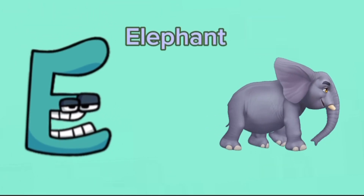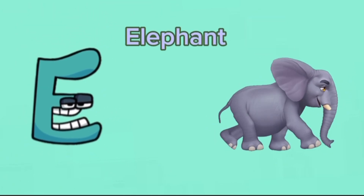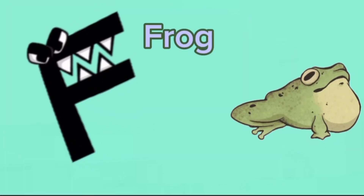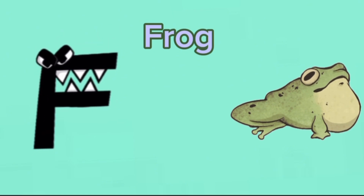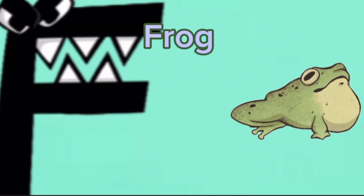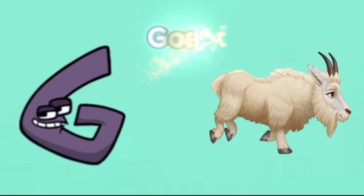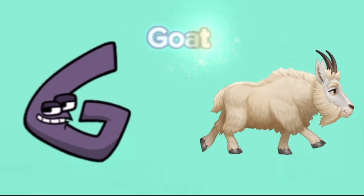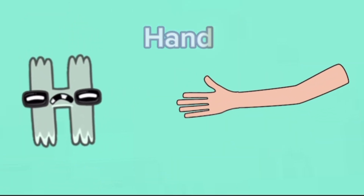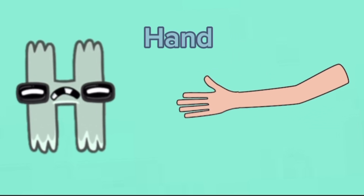E is for elephant, e-e-elephant. F is for frog, f-f-frog. G is for goat, g-g-goat. H is for hand, h-h-hand.